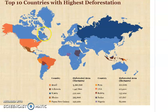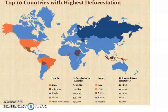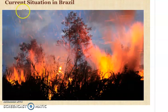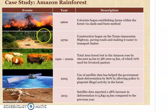In this diagram you can see the top 10 countries with the highest deforestation in the world. Brazil is at the top, experiencing the most deforestation. The current situation in Brazil involves a lot of deforestation happening because of fire. You can also see a case study of the Amazon forest, showing how deforestation happened from 1960 till 2013.